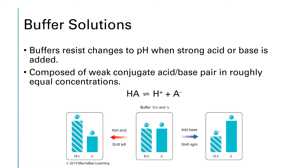Buffers are solutions that resist changes to their pH when you add either a strong base or a strong acid. The composition of a buffer is a weak acid and its conjugate base, or a weak base and its conjugate acid. So the buffer solution already has both an acid and a base present in it, and this is why it can react with either.